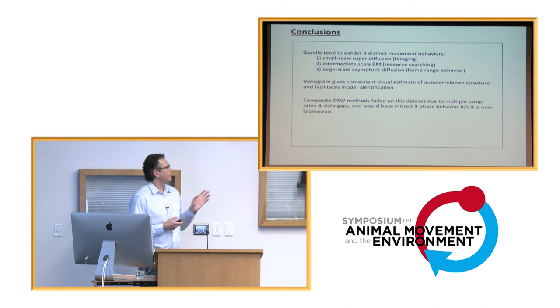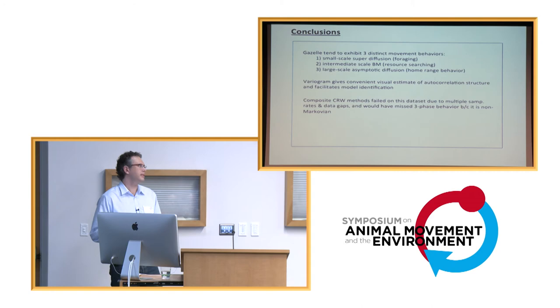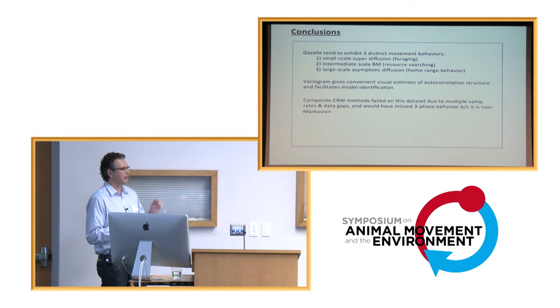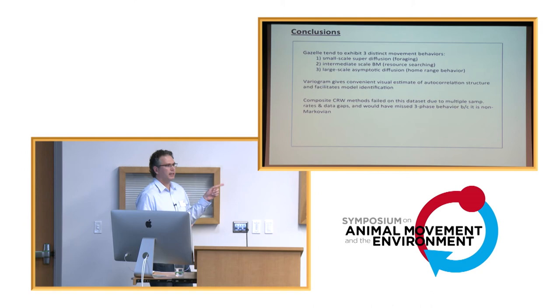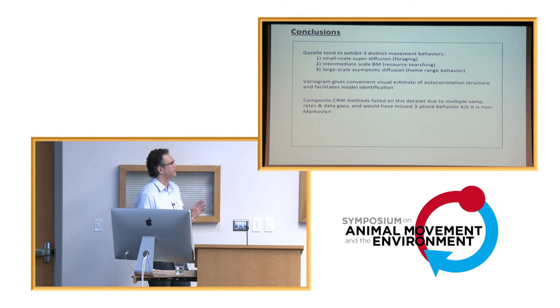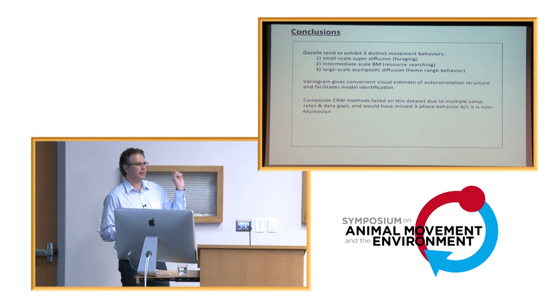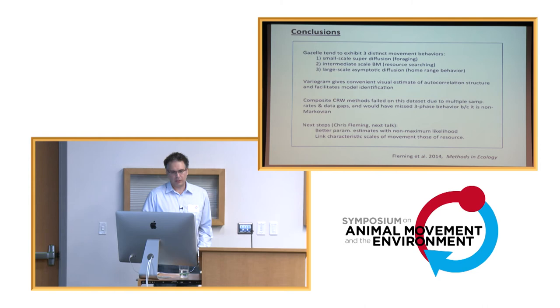Composite correlated random walks failed utterly on this dataset because of the sampling structure of the data was far too ugly. But even if you simulate data from an OUF process such that the data are perfect, no location error, no missing observations, no gaps, lots of data, lots of points, you still cannot recover the important time scales of the process that generated the data. You just can't see it with those approaches. You get something close to the sampling rate, which has nothing to do with the process, and you get something else that seems kind of random.